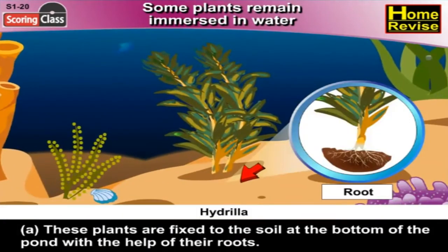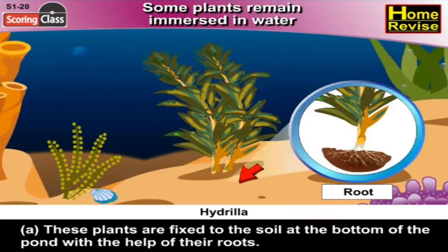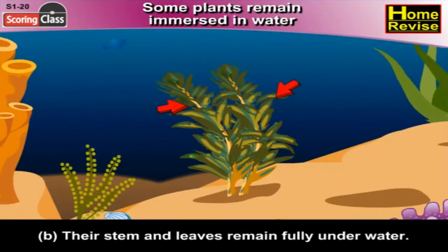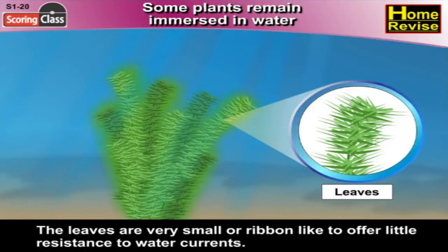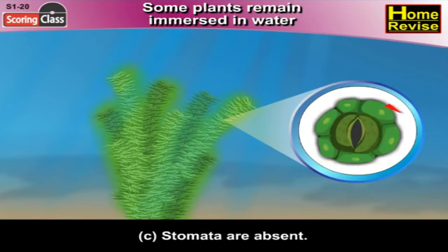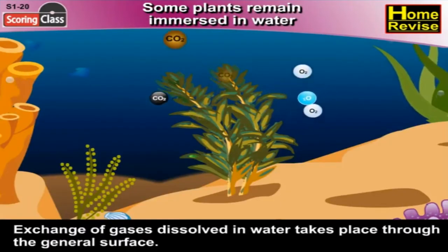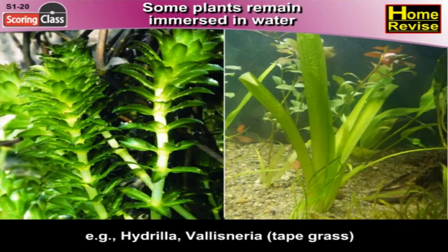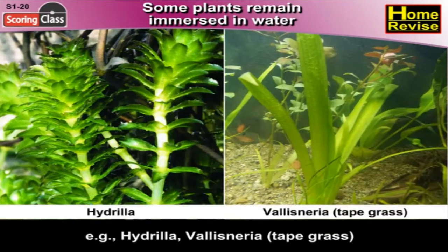Some plants remain immersed in water. Special features: (a) These plants are fixed to the soil at the bottom of the pond with the help of their roots. (b) Their stem and leaves remain fully under water; the leaves are very small or ribbon-like to offer little resistance to water currents. (c) Stomata are absent; exchange of gases dissolved in water takes place through the general surface. Examples: Hydrilla, Vallisneria — also called tape grass.